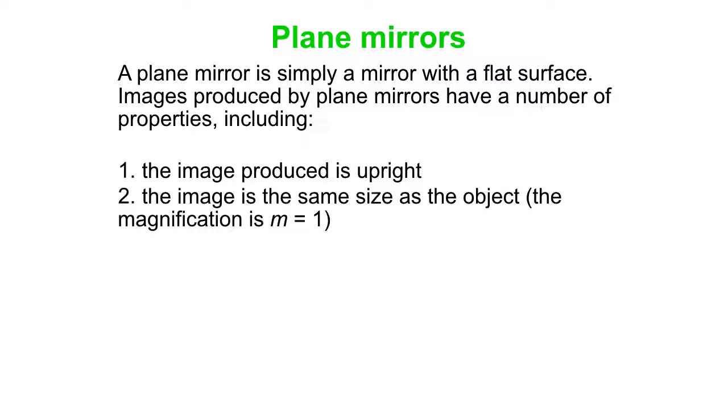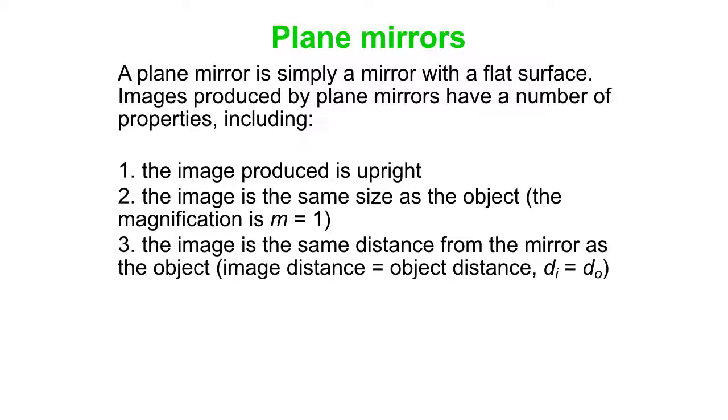The image is the same size as the object. That means the magnification is one. It's not smaller or larger than the object, just the same size. The image happens to be the same distance from the mirror as the object is. We say the image distance equals the object distance. So if you're two meters in front of a mirror, you see an image of yourself actually two meters in behind the mirror.